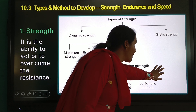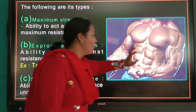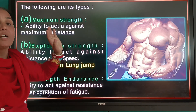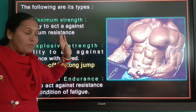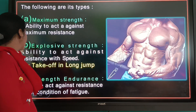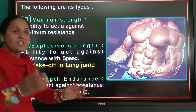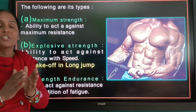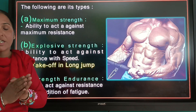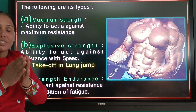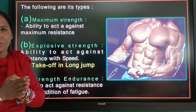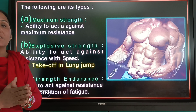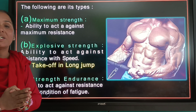We are discussing the types of strength. The types of strength include maximum strength. What is static and dynamic strength? Static strength is the stable position — we know that our muscles are not visible.